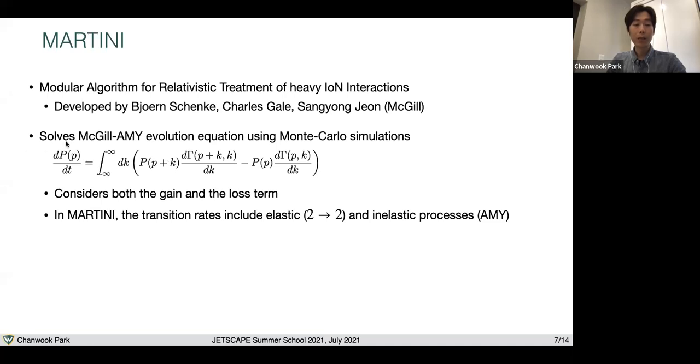Here, the left-hand side is the time differential probability of having a particle of momentum p. In the right-hand side, this gamma is the transition rate for a particle of momentum p plus k radiating a gluon of momentum k, so the parton becomes momentum p after this transition. The first term represents the gain term, and the second term is the loss term. In Martini, this transition rate includes 2-to-2 elastic process and inelastic process from AMY.